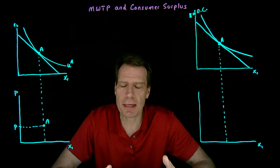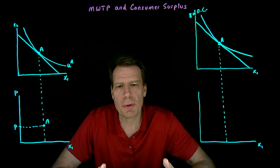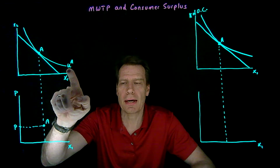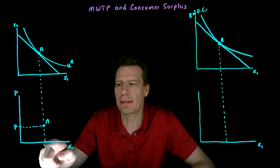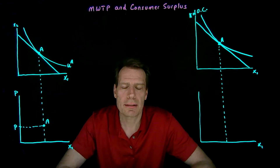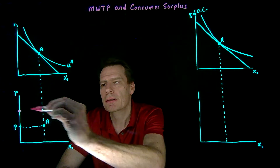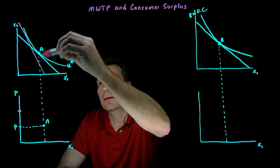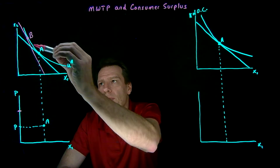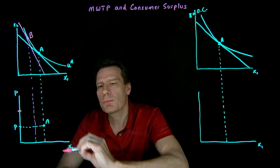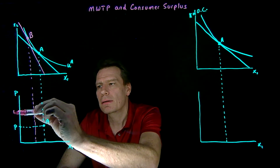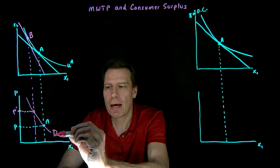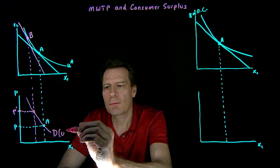We've seen how we can derive a compensated demand curve — a demand curve that tells us how much a consumer would consume if she was always compensated to reach the original indifference curve she started on. Here we have a consumer that starts on the original indifference curve ua at the optimal bundle a, consuming that much of x1 at the original price p. When we increased the price to some higher price, that made the budget constraint steeper. We shifted it up to be tangent to the original indifference curve to compensate the person, reaching point b. That's how much the consumer would consume of x1 at the higher price if we compensated her. Connecting these points gave us the compensated demand function, assuming we keep utility at the original level ua.